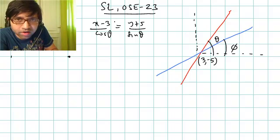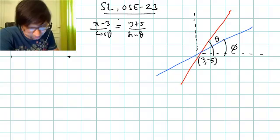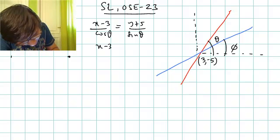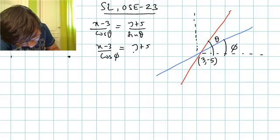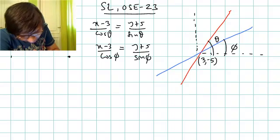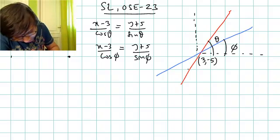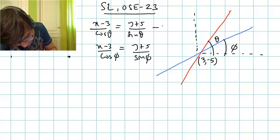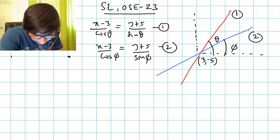Another line is x minus 3 over cos phi, making angle phi with the x-axis and having slope tan phi. The only difference between the two lines is theta versus phi. Let's represent the first line in red and the second line in blue.